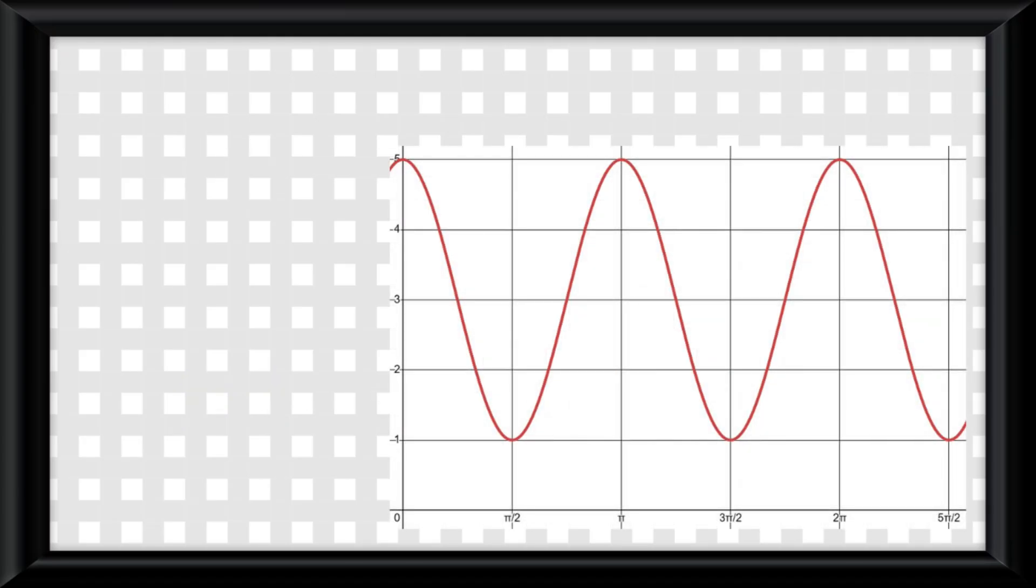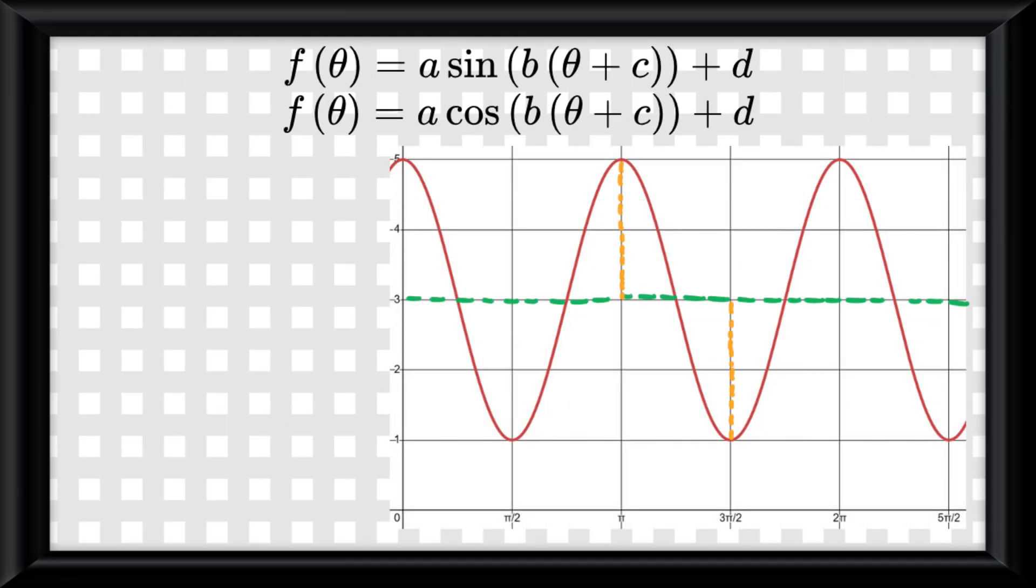Okay, so let's practice really quick. Take a look at this graph. To construct an equation from it, first we find the midline, which is 3. Then find the amplitude by finding the distance from the midline to the maximum point, and it's 2.